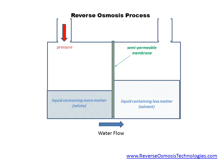This time, pressure — represented by the red arrow — is being applied to the liquid containing the higher concentration of matter, causing it to flow in a reverse direction through the semi-permeable membrane, as shown by the blue arrow.